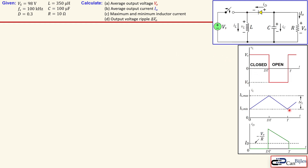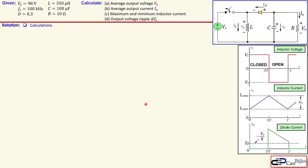This is the inductor current showing the charging and discharging profile again, and this is the diode current. Now let's look at the calculations step by step.